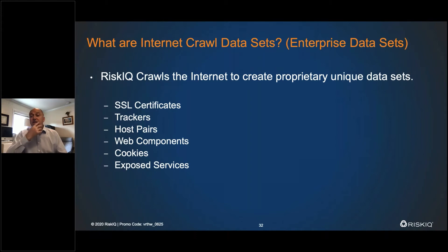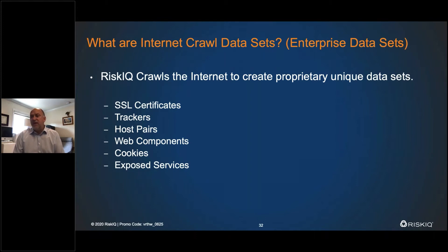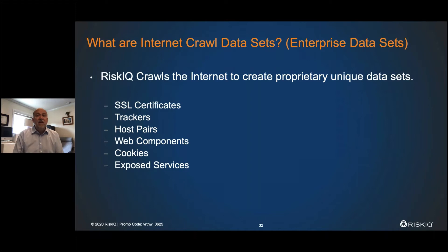There was also a question: did GDPR change the type of passive WHOIS history that you're allowed to store? We have a history of data that goes back pretty far. When we have records that were collected prior to GDPR, sometimes a record today might be privacy protected, but three years ago that site wasn't privacy protected and we may have some records for it. You do need a paid license to see the full history. If you look and see no history, enterprise users may have access to additional information like exposed services.